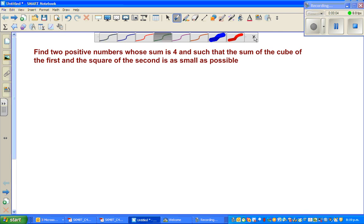Hello friends, in this video I'm going to do an example on calculus, an application of calculus, also an example of optimization or minimization. Let's read the question: Find two positive numbers whose sum is 4 and such that the sum of the cube of the first and the square of the second number is as small as possible.